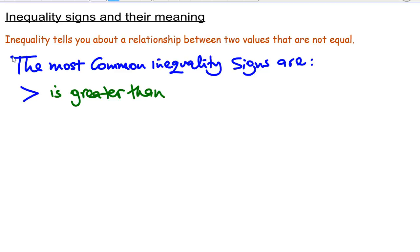The second symbol is less than. The third one is greater than or equal to. The third one is less than or equal to.